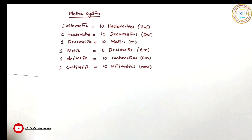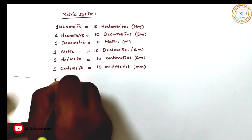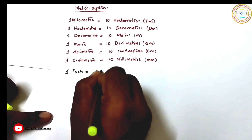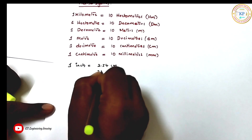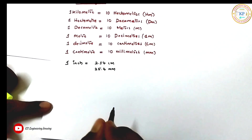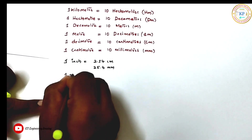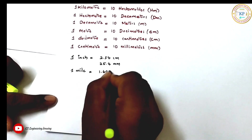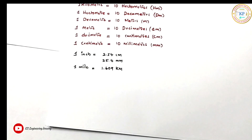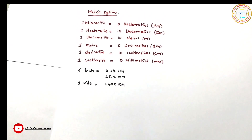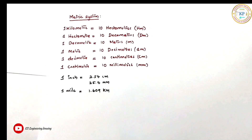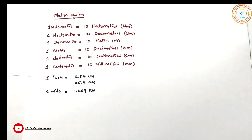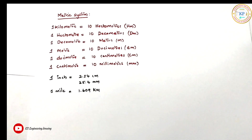In addition to this, we need to remember two more conversions: 1 inch equals 2.54 centimeters or 25.4 millimeters, and 1 mile equals 1.609 kilometers. To draw the scales — plane scale, diagonal scale, comparative scale, and vernier scale — we need to remember the metric system conversions from kilometer to millimeter.